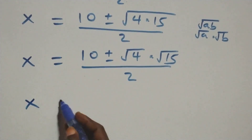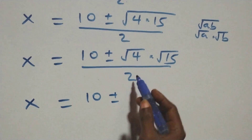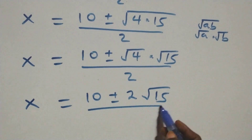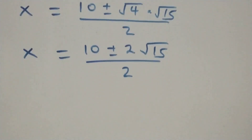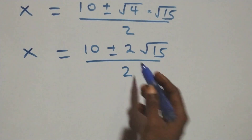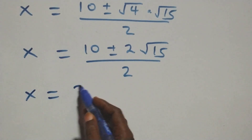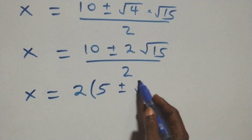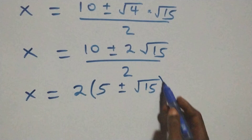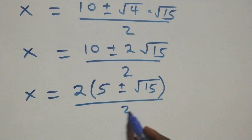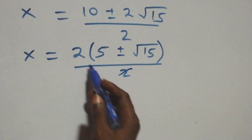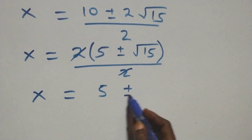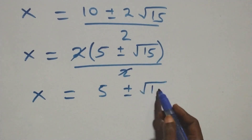Square root of four is two, so we have x equals to ten plus or minus two times root fifteen, over two. We factor out the two in the numerator: x equals to two times (five plus or minus root fifteen), over two. The twos cancel, giving x equals to five plus or minus root fifteen.